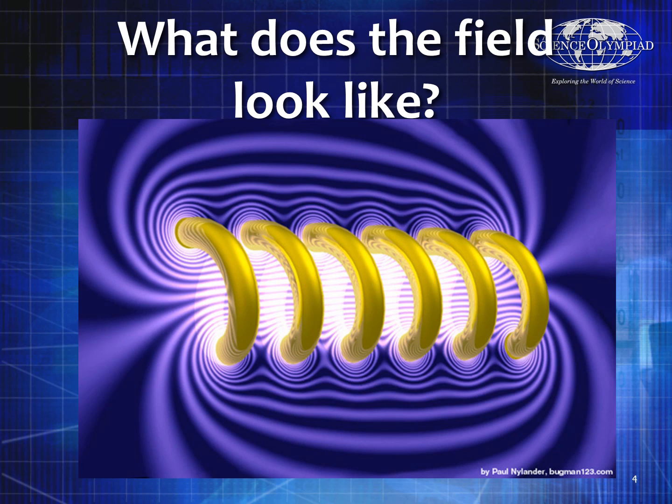So what does the magnetic field look like? It looks something like this. Each one of the turns actually creates ripples of magnetic field lines, which when combined create the magnetic field loops.